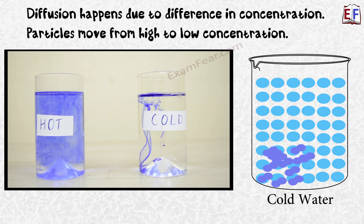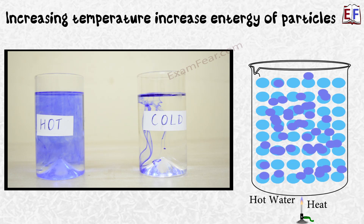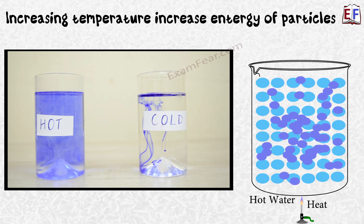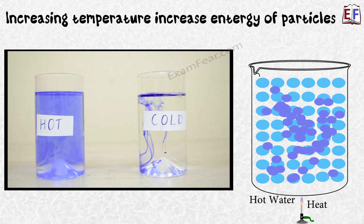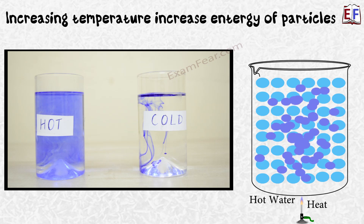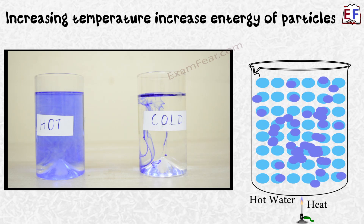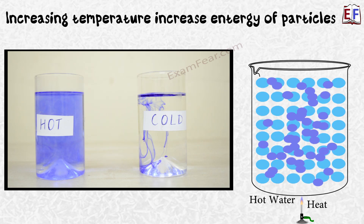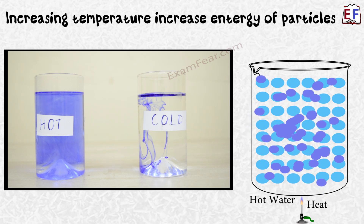The only difference is that when we increase the temperature, the particles of any substance get more energetic. When you increase the temperature, the particles start to move randomly, so the intermolecular spaces between them increase and the particles are more energetic. It is just like when you are standing versus when you are running — when you run, you have more energy. Similarly, when the particles have more energy, they diffuse more.